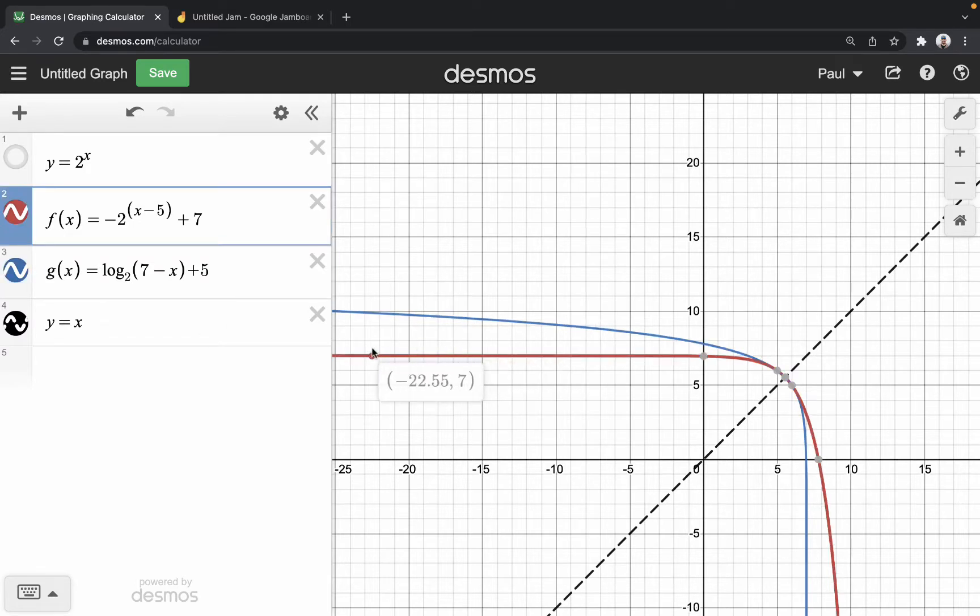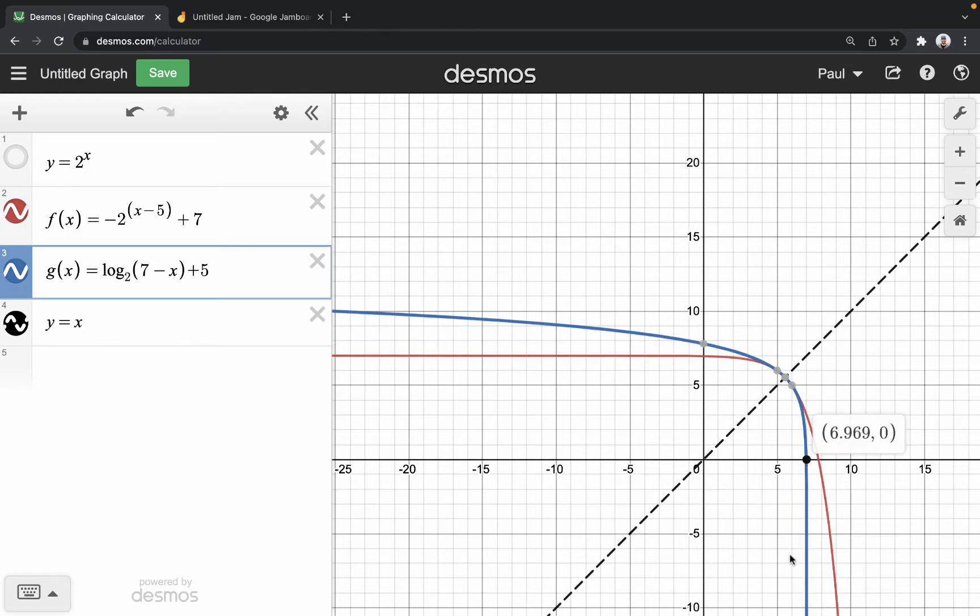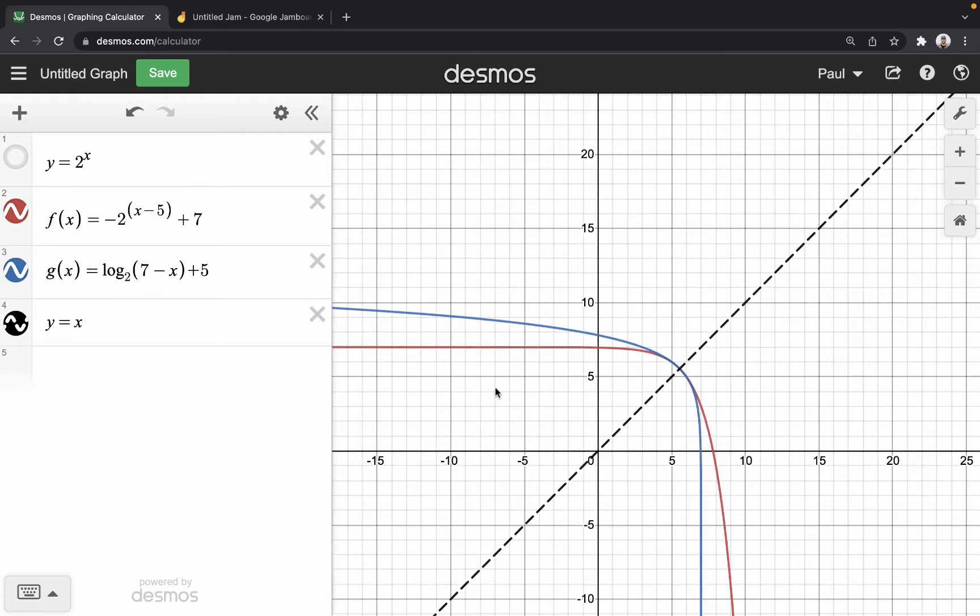We see the exponential leveling out at 7. And we should see the inverse with that kind of a vertical asymptote that's very close to 7 as well.